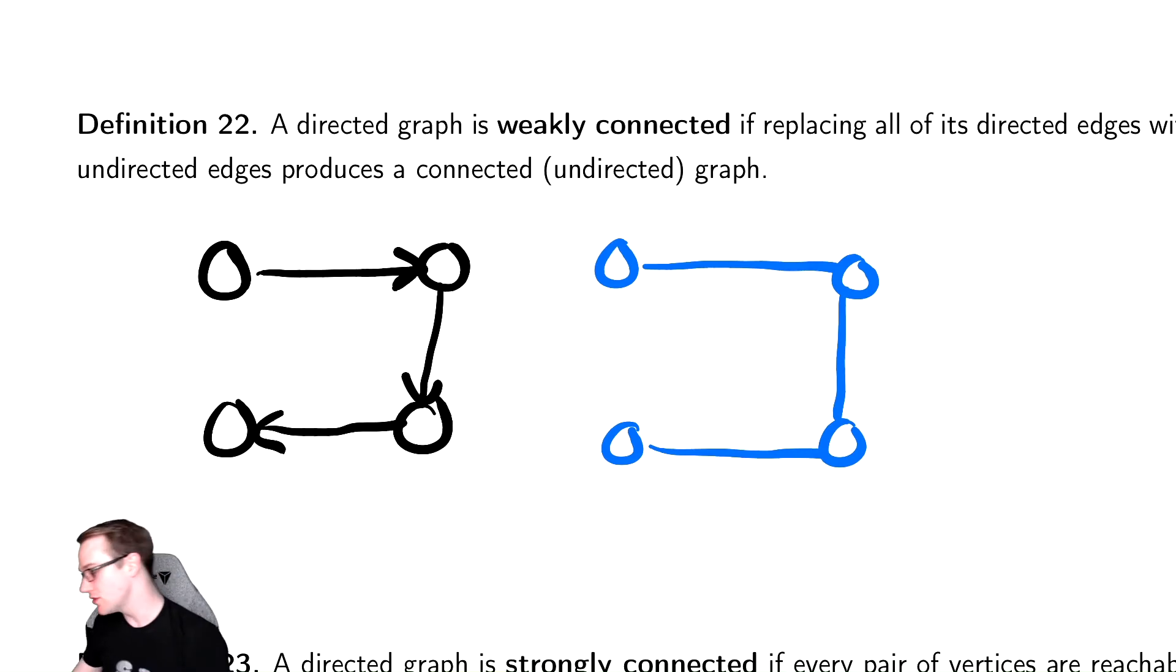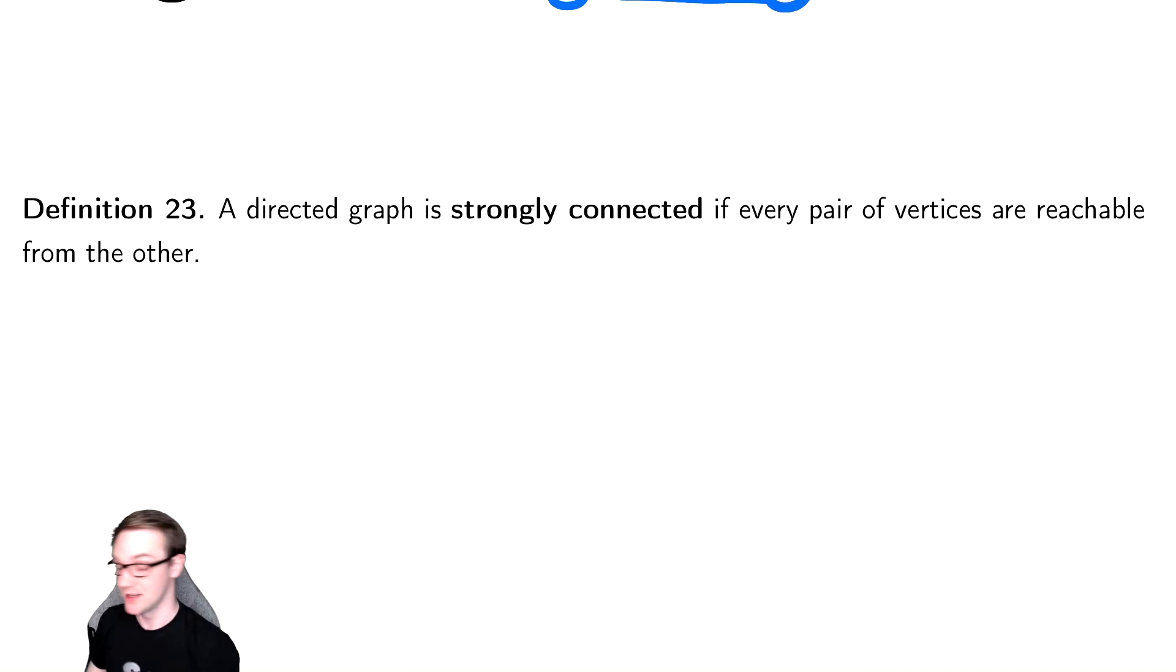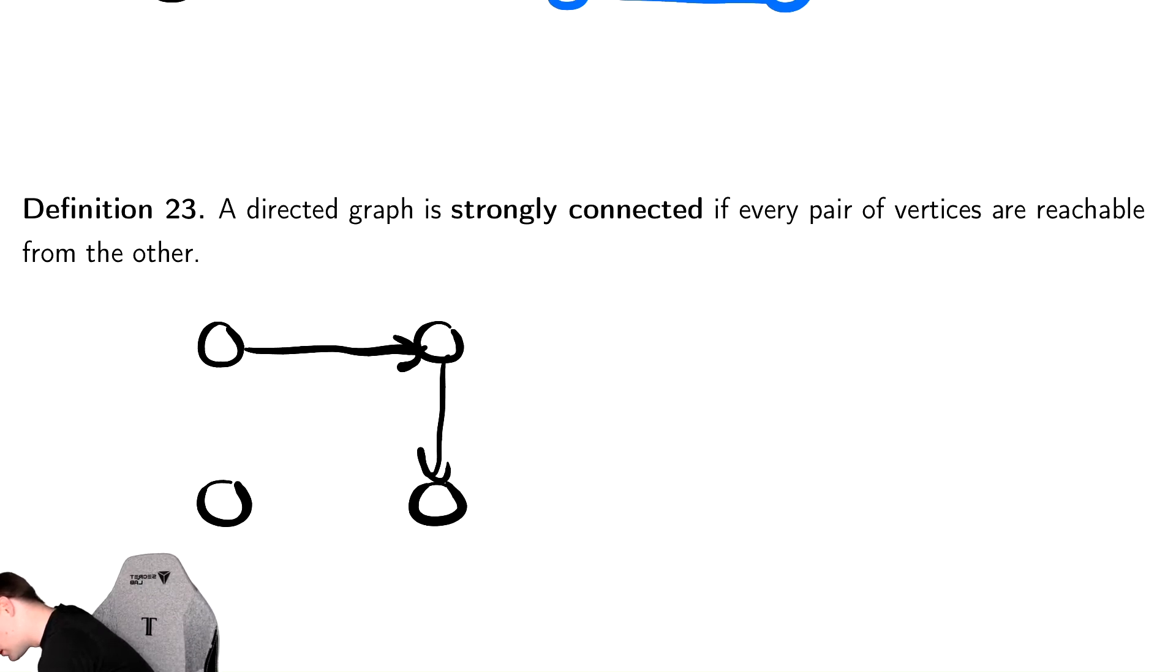By contrast, a strongly connected graph is one where it's still reachable and it's directed. So let's do that same example that is not strongly connected. This one is invalid.